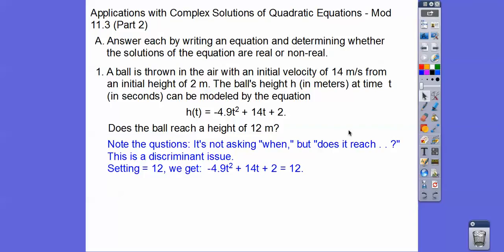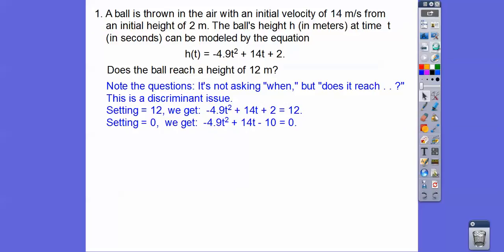We're going to subtract 12 to make it equal to 0 so we can go ahead and use the discriminant right here. So there's the discriminant, b squared minus 4ac.